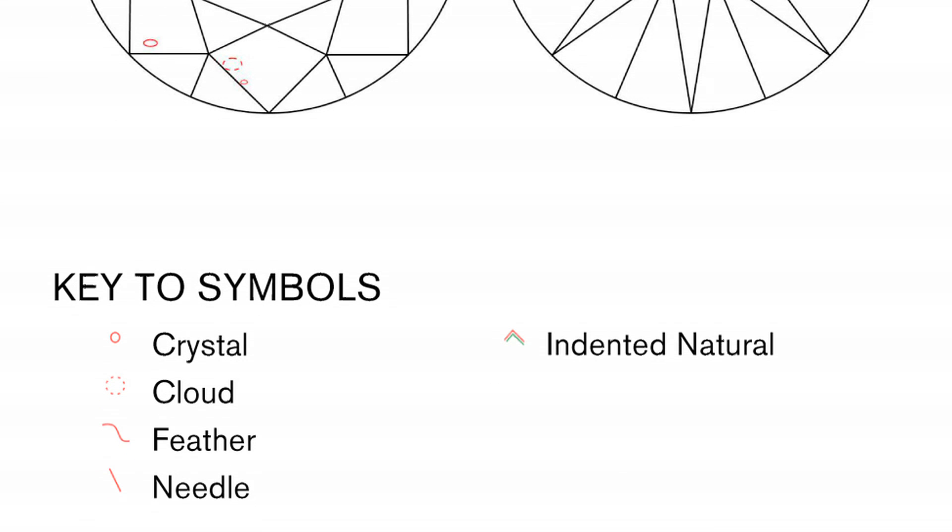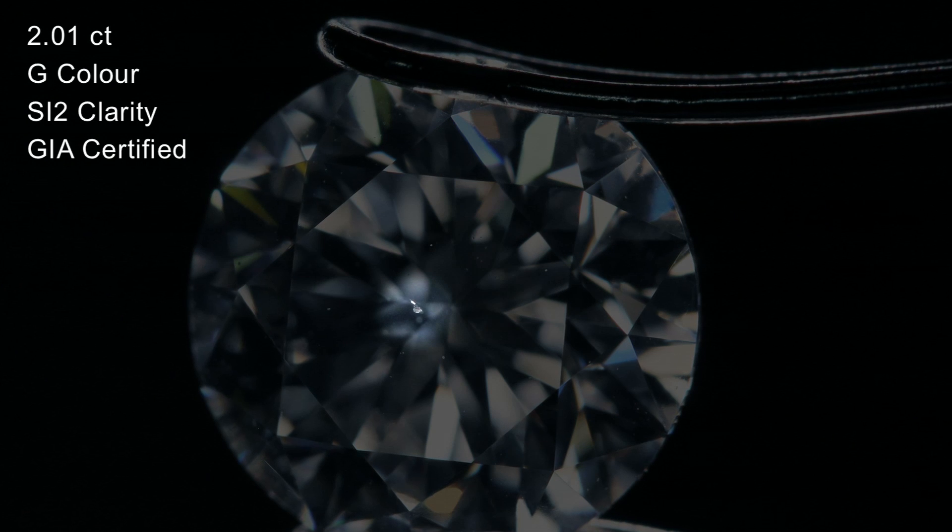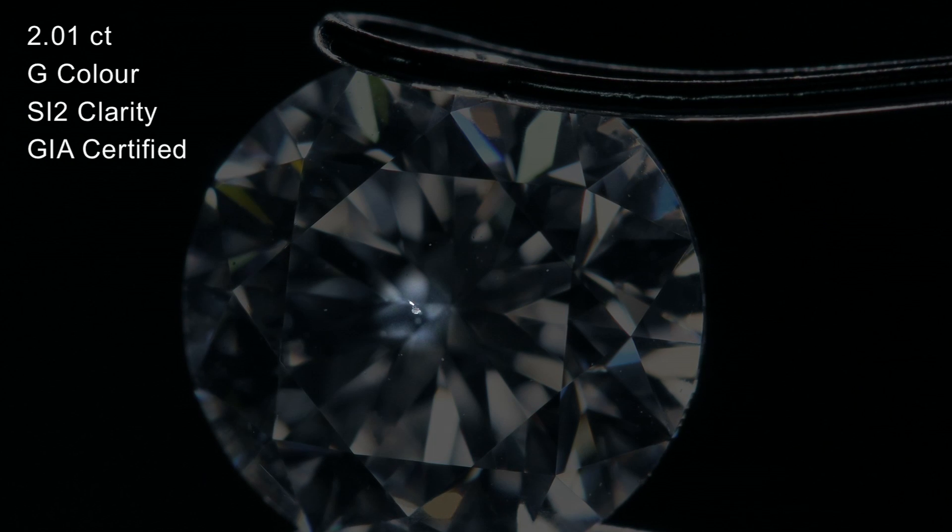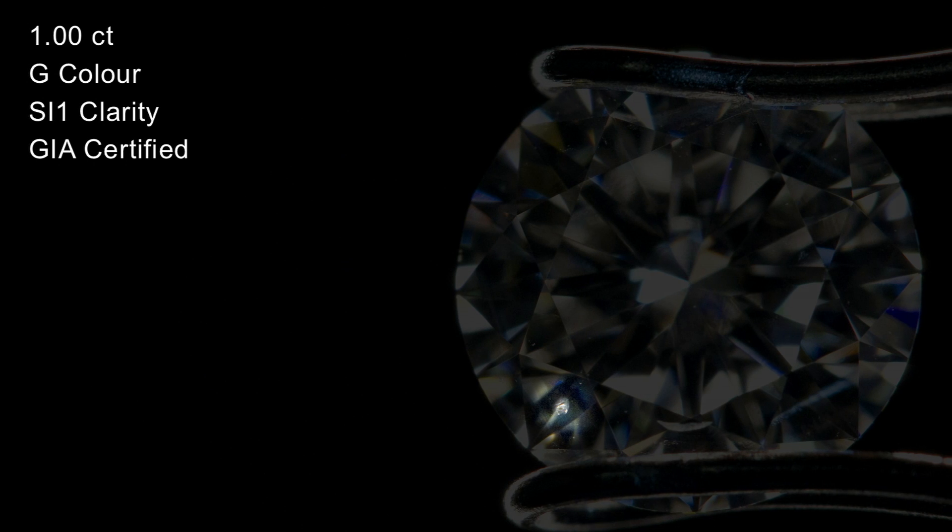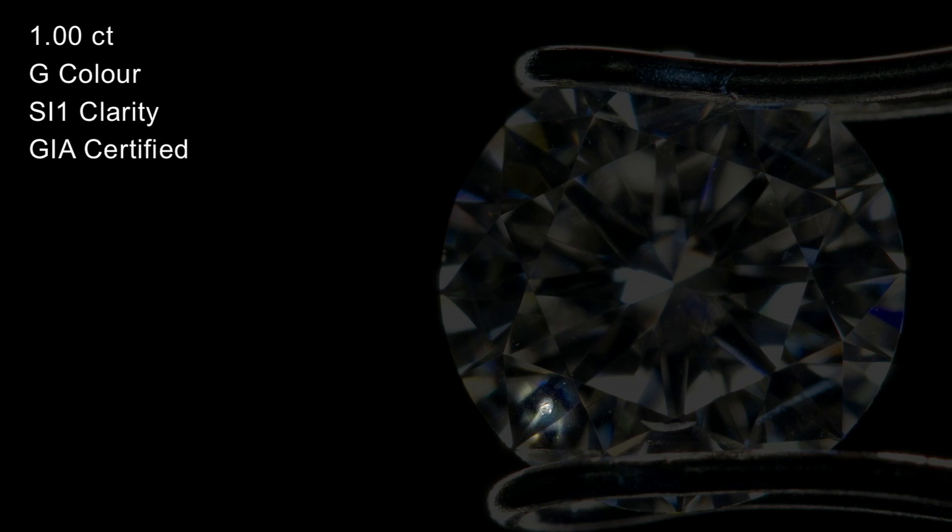The first inclusion is called a crystal. Some crystals can resemble a diamond within a diamond, and some can resemble bubbles. Some crystals can be so thick that they start to take on a darker and even a black appearance.